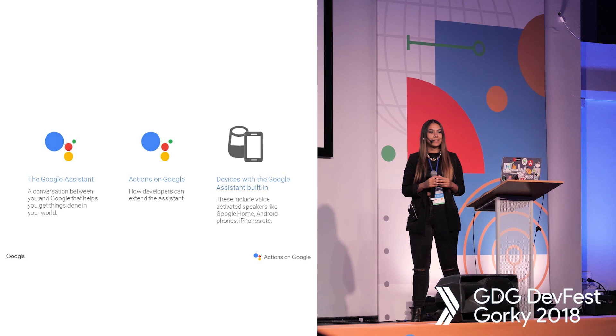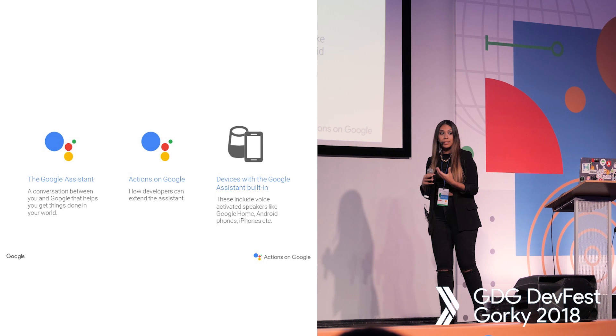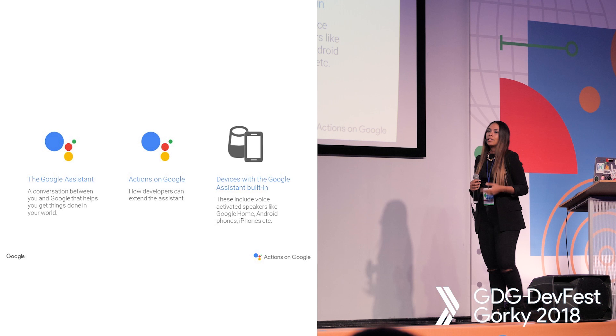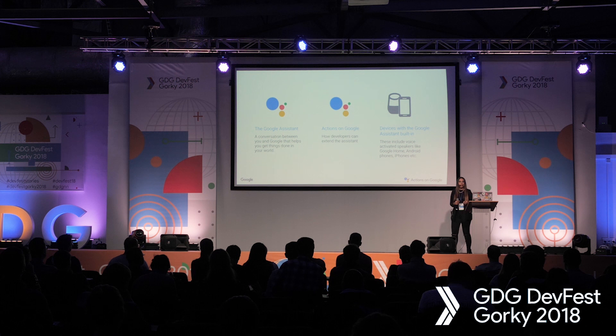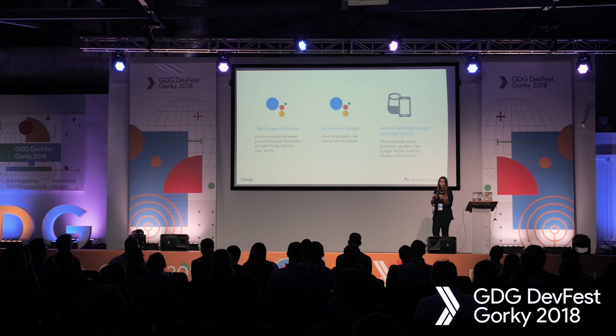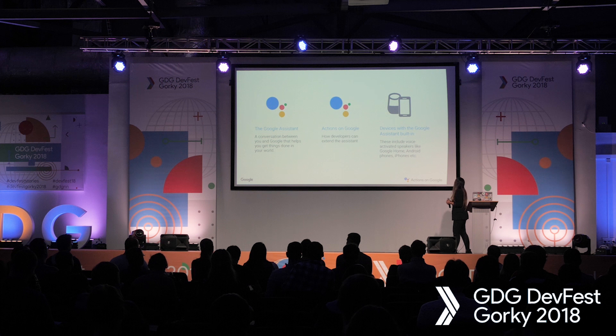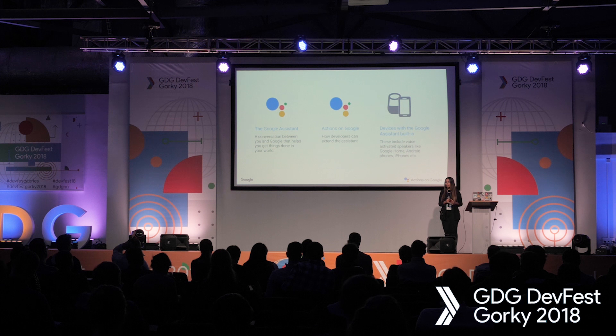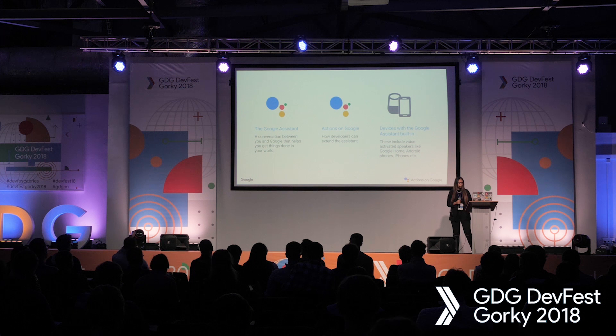First of all, we're going to use the Google Assistant — it will be the conversation that we have with somebody. Second, we are going to use Actions on Google. With Actions on Google, we are going to create actions to use the Google Assistant and have more functionality. You have a small device and you can create stuff. And then we have different devices — not only the Google Assistant, but also our mobile phones and other things like IoT.